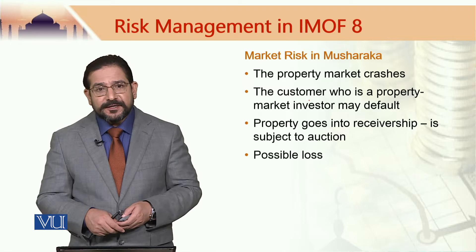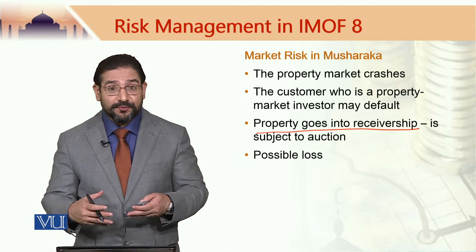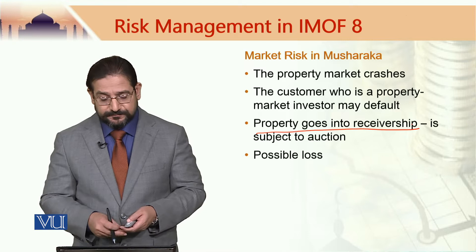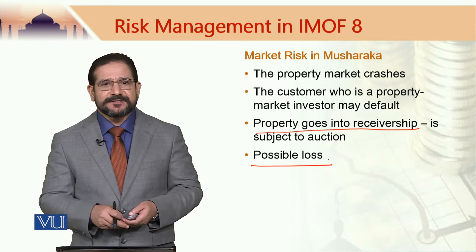In that case, the property — or properties in this context — would go into receivership, which means they would be auctioned. That is a possible loss, and this is an example of market risk in Musharraka.